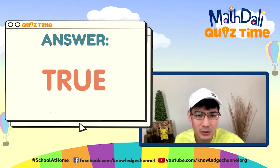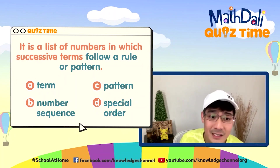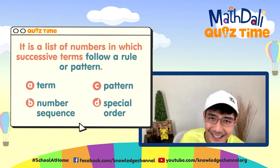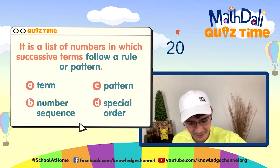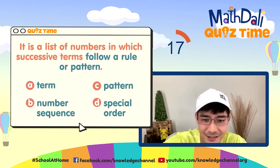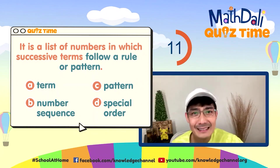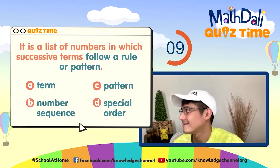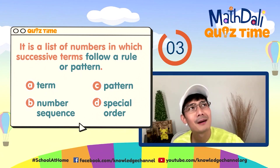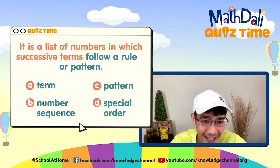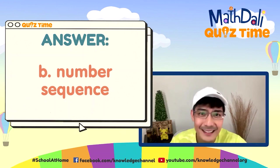Let's move on to question number 2. It is a list of numbers in which successive terms follow a rule or pattern. Is it A — a term? B — number sequence? C — pattern? Or D — spatial? 20 seconds. Ang tamang sagot: if you remember question number 1, number sequence is correct — letter B.